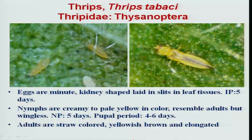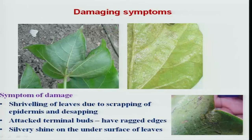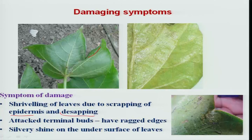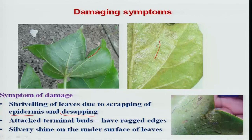Thrips multiply rapidly under dry conditions. The symptom is shriveling of leaves due to scraping of the epidermis and continuous de-sapping, producing a characteristic silvery appearance on the lower surface of the leaves, which can be seen from a distance.